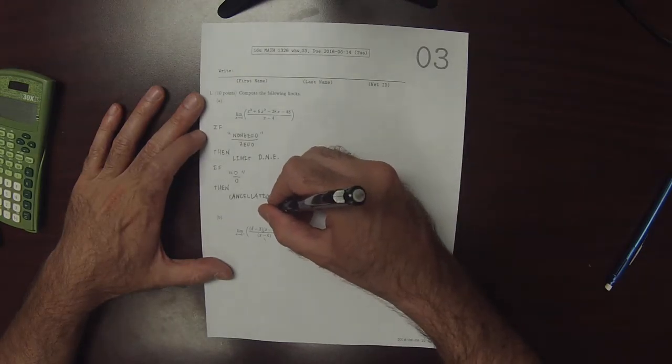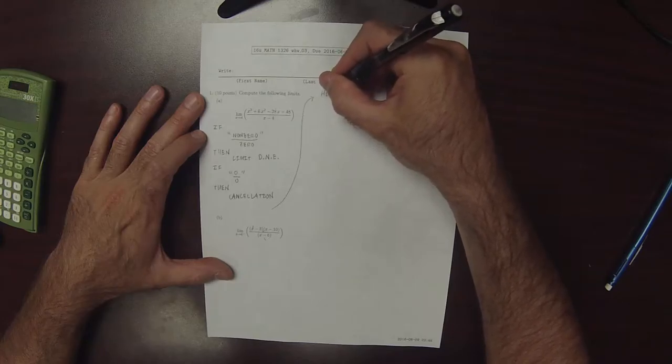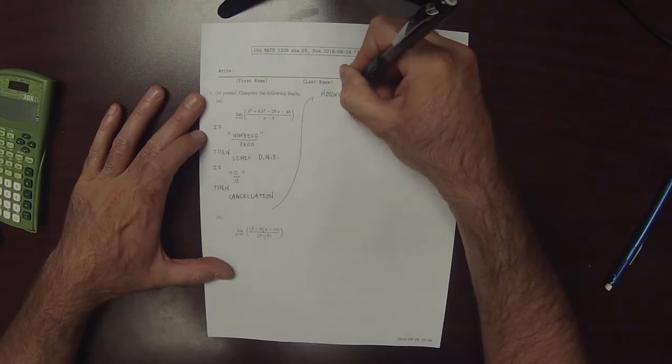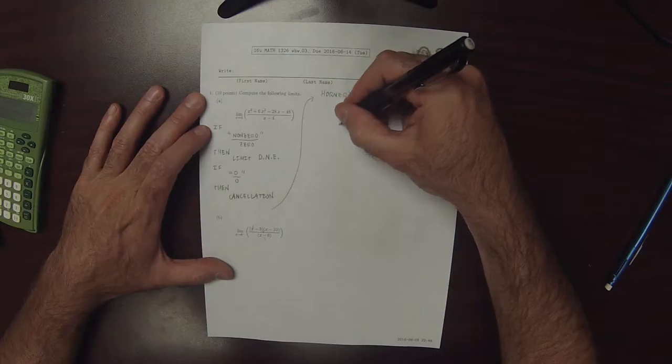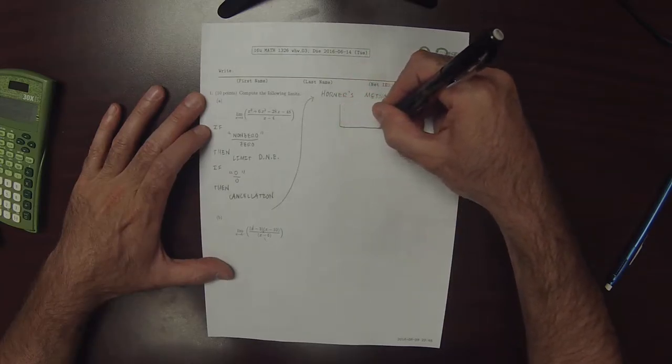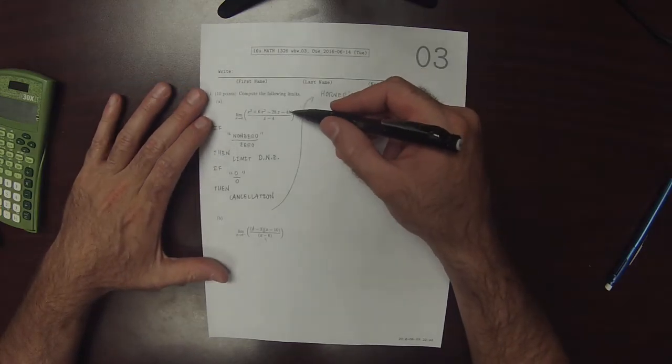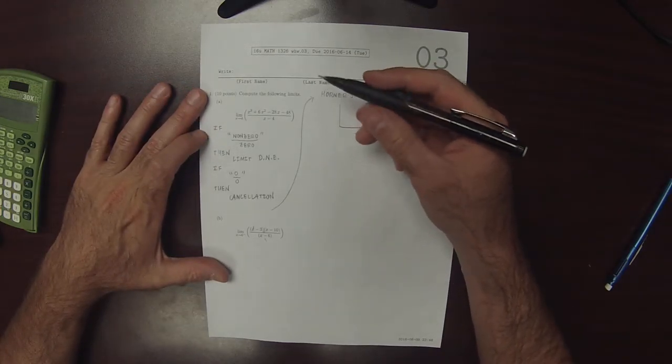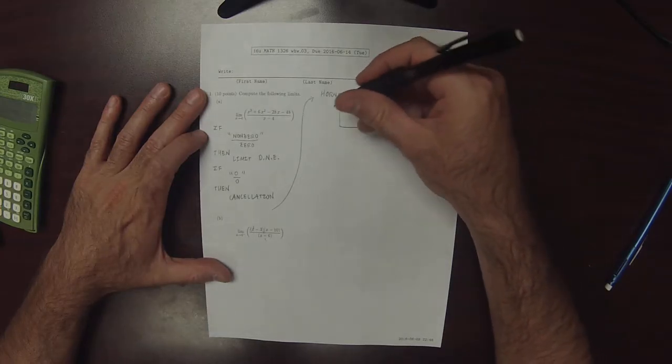So the quickest way to check that is with Horner's scheme, or Horner's method to evaluate a polynomial. Because that allows us to do two things simultaneously. We can evaluate the numerator at 4. And in the case that it evaluates to 0, it also factors the numerator.